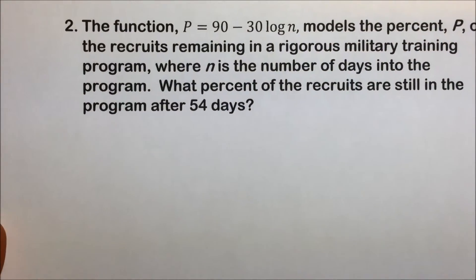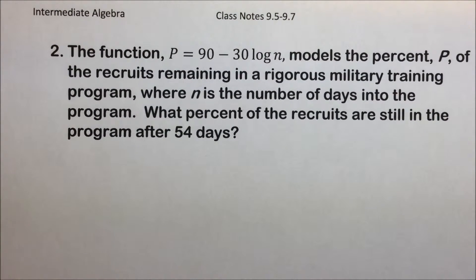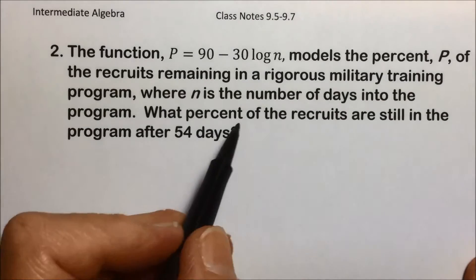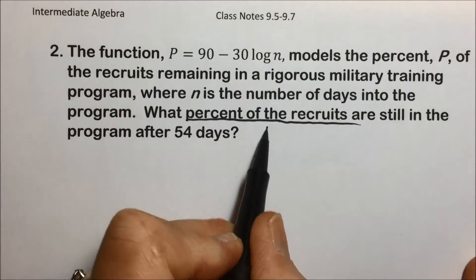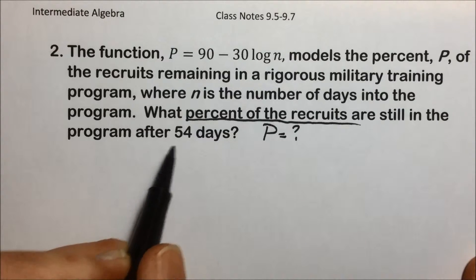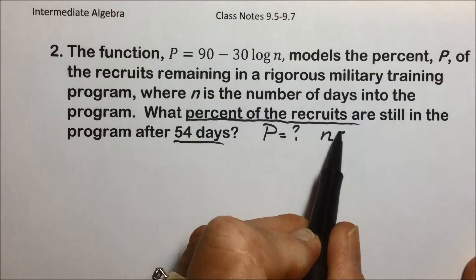In this next example, we have a problem from the military world. The function P = 90 - 30 log(n) models the percent P of the recruits remaining in a rigorous military training program, where n is the number of days into the program. What percent of the recruits are still in the program after 54 days? So they're asking us for the percent of recruits, that would be P that we're looking for, and it tells us that the program has been running 54 days, and that would be what n is equal to.